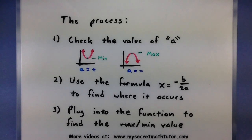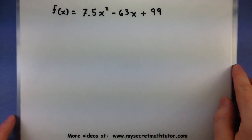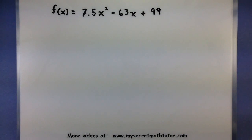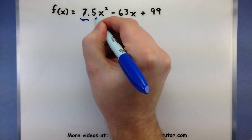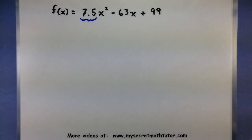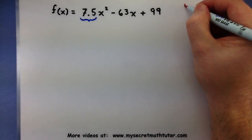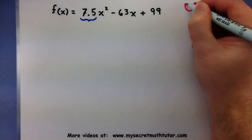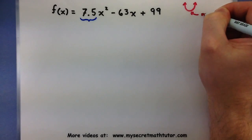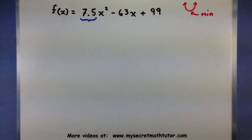Let's do two examples using this process so you can see exactly how easy this is. Here's the first quadratic function — I want to find its maximum or minimum, depending on which one it has. The very first thing I do is check the 'a' value, the coefficient right in front of x squared. As you can see, this is positive — 7.5, a nice positive number. The information I'm getting from that is that my parabola is facing up, so I know it will have some sort of minimum value, and now I just have to find it.